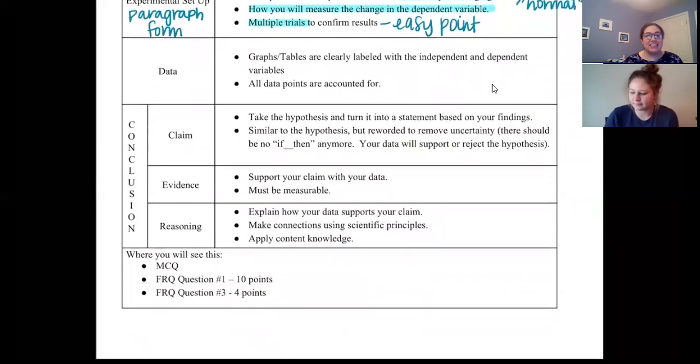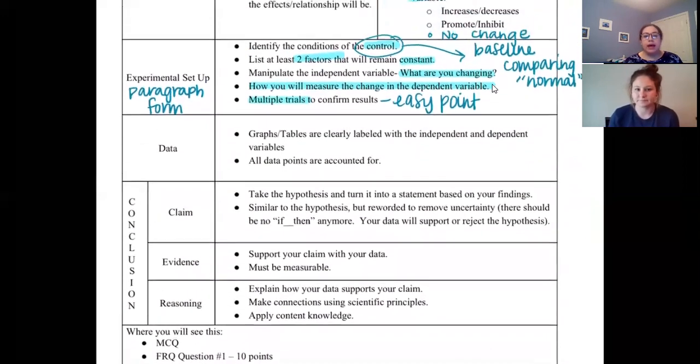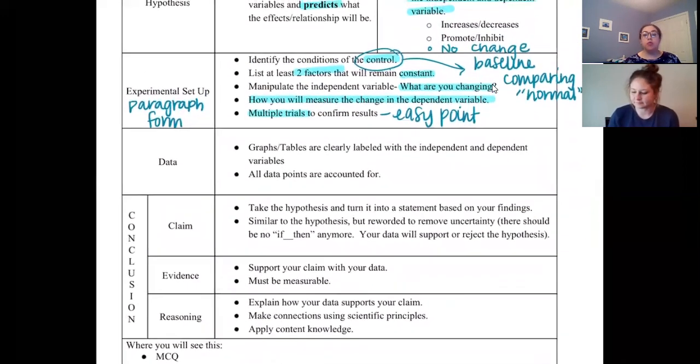All right, so the next portion is the data. Now with the data you're looking at showing the graphs or including numbers. This is going to be quantifiable and you want to make sure that your independent variable and your dependent variable, in other words, what you're testing and what you're measuring, are clearly seen on this table. And you also want to make sure you account for all your data points.